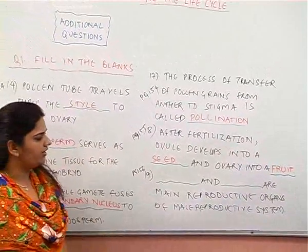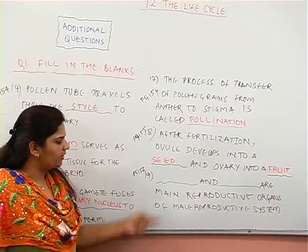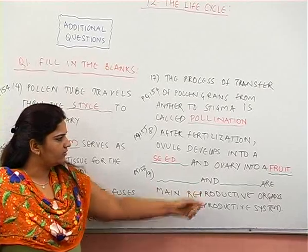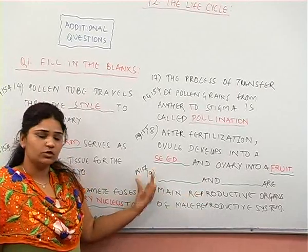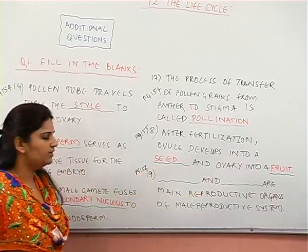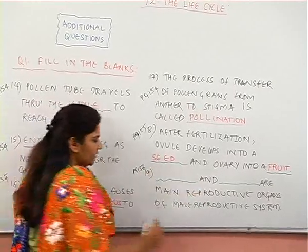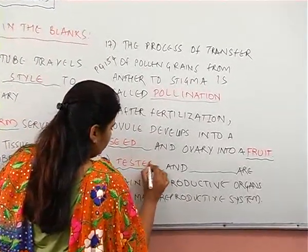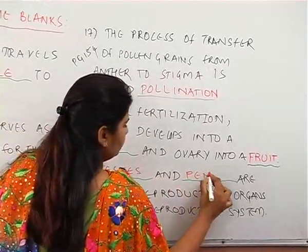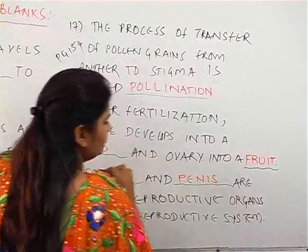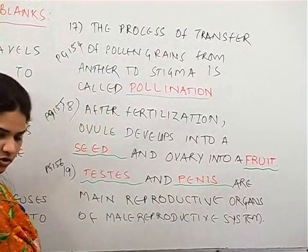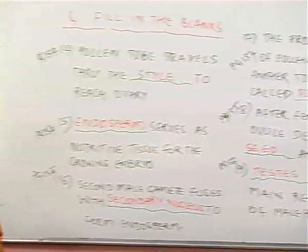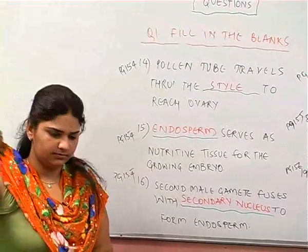The nineteenth question from page 156: testis and penis are the main reproductive organs of the male reproductive system. Please mark these questions in your textbooks with the correct answers.